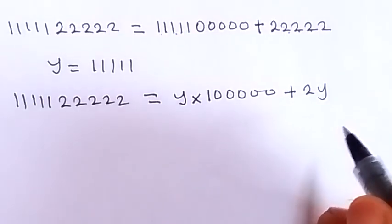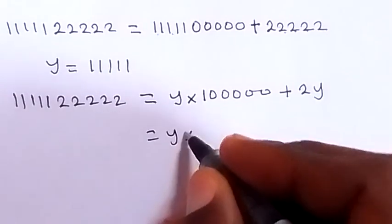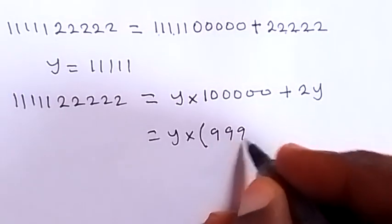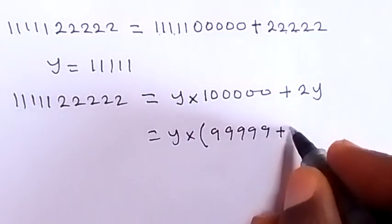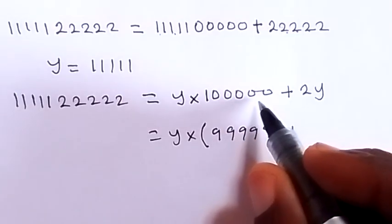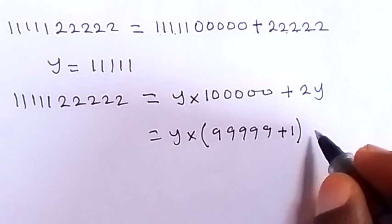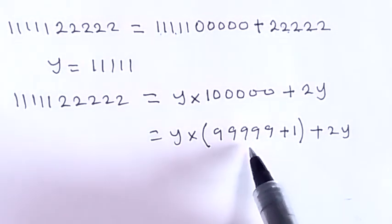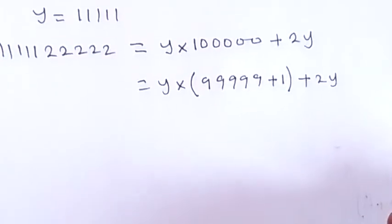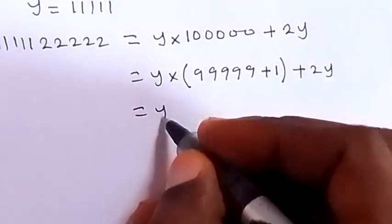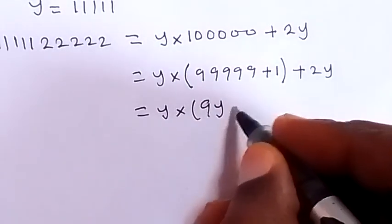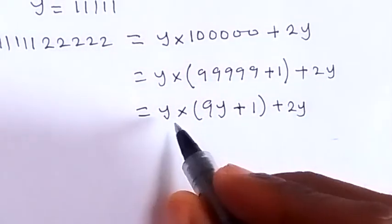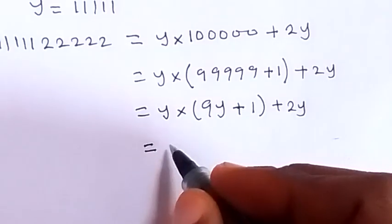Now we work with the right-hand side again. Instead of writing 100000 directly, we write it as 99999 plus 1, which gives us 100000 back. And 99999 can be written as 9y, since y is 11111 and 9 times 11111 equals 99999.